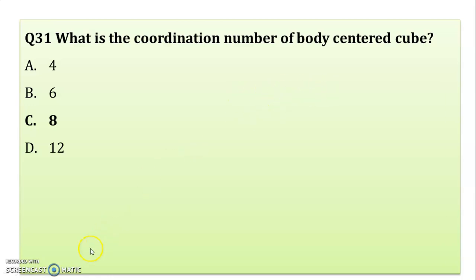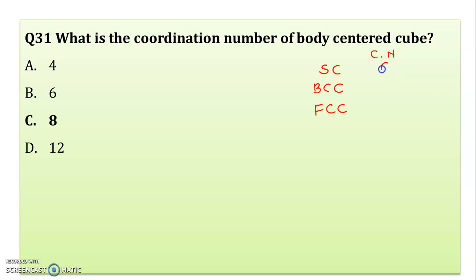What is the coordination number of body-centered cubic (BCC)? For cubic structures there are three types: simple cubic, body-centered cubic (BCC), and face-centered cubic (FCC). The coordination number for simple cubic is 6, for BCC it is 8, and for FCC it is 12. Since BCC is asked here, the coordination number is 8.